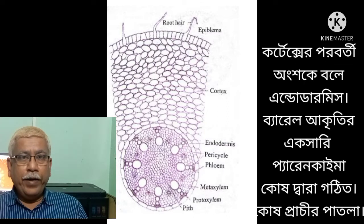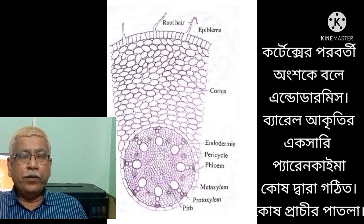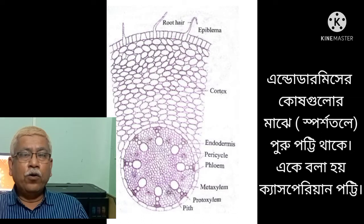Next to cortex is endodermis. Endodermis is the innermost layer of the cortex. It is single-layered, composed of barrel-shaped parenchyma cells. Cells are thin-walled. Cells of the endodermis possess special thickening in their radial and tangential walls, called the Casparian band.